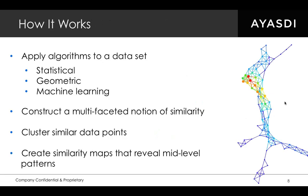So how do we get there? We're looking for mid-level patterns of denials and richly described profiles of each of those patterns. First, we apply any number of algorithms to a data set — these algorithms might come out of statistics, geometry, or machine learning. We try a variety of options because every data set responds differently to different ones. We use those different algorithms along with all of the features in your data to construct a multi-faceted notion of similarity — for any pair of claims, we want to understand how similar are these two claims based on everything we know about them.